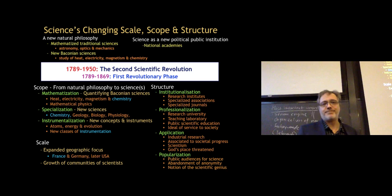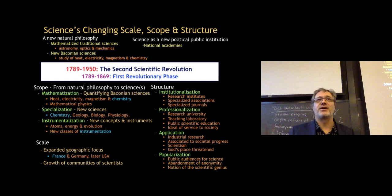There's also an abandonment of anonymity — scientists become known, even public heroes or celebrities. The notion of scientific genius is coined, with Newton being one of the foremost examples, and later people like Einstein and Marie Curie seen as celebrities in their own right as scientists.